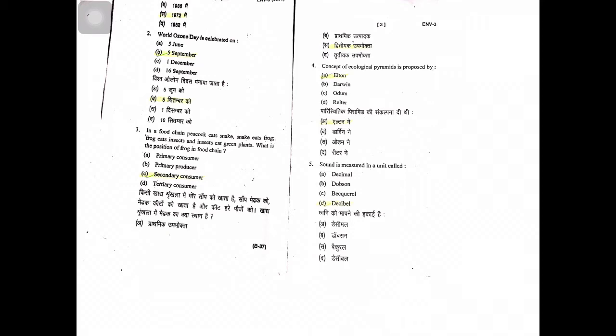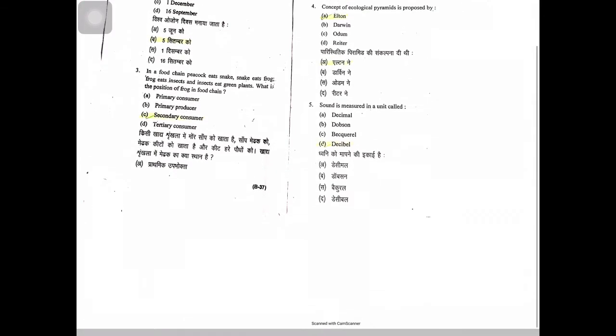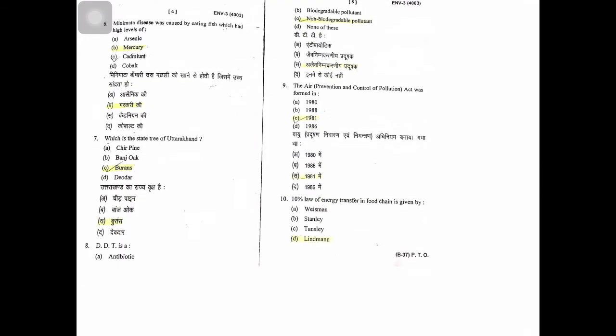Secondary consumers. The concept of ecological pyramid is proposed by Elton. Sound is measured in a unit called decibels. Minamata disease was caused by eating fish which had high levels of mercury.